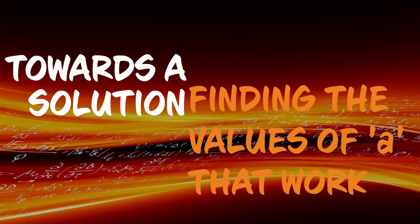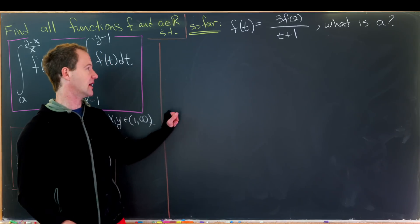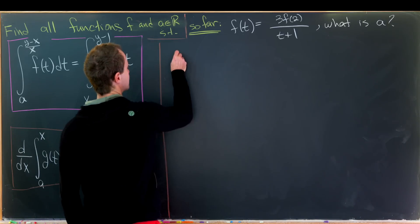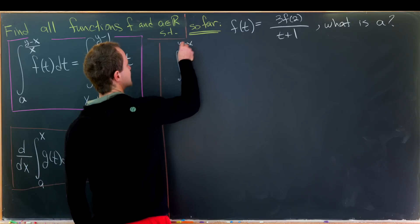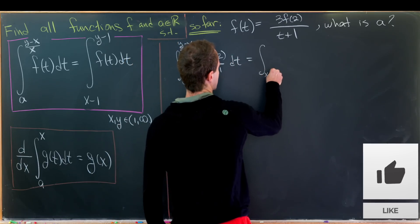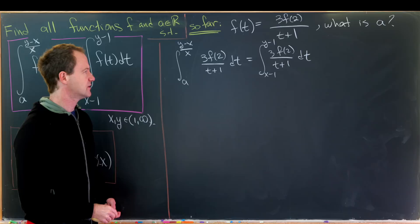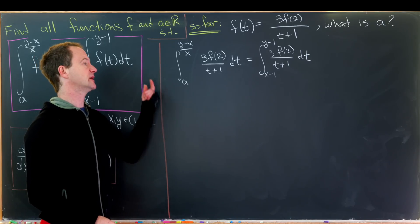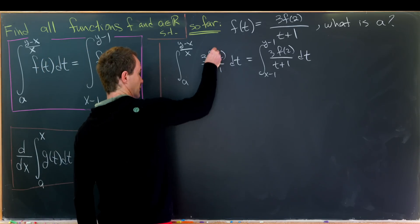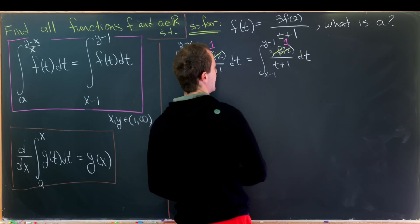Now let's plug this shape for f into the original equation to determine the values of a. We have the integral from a to (y minus x)/x of 3·f(2)/(t+1) dt equals the integral from x minus 1 to y minus 1 of 3·f(2)/(t+1) dt. Since 3·f(2) is a constant, we can factor it out and cancel it from both sides — assuming f(2) is not zero — leaving us with the integral of 1/(t+1).